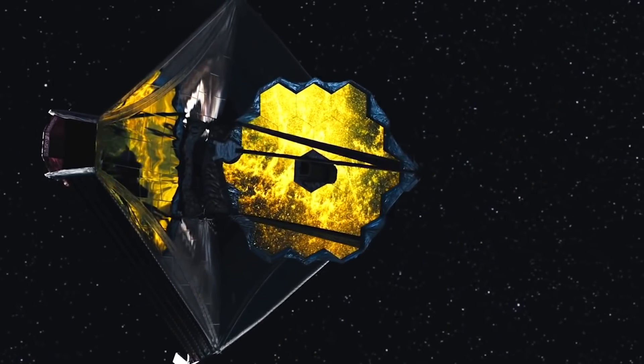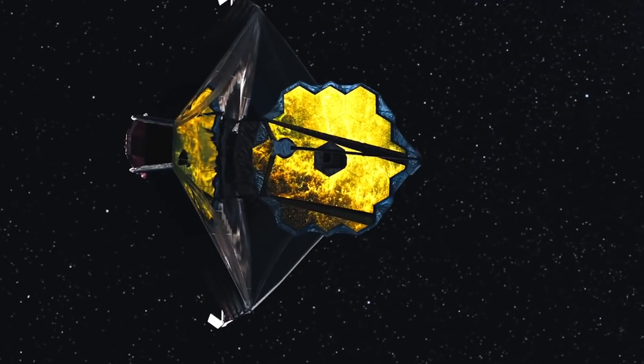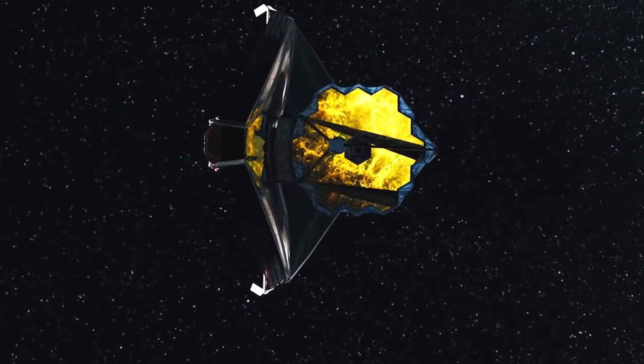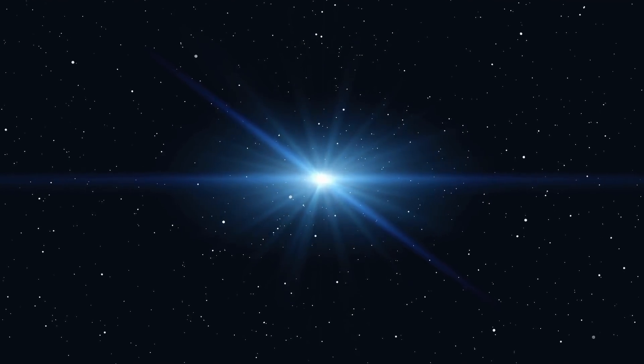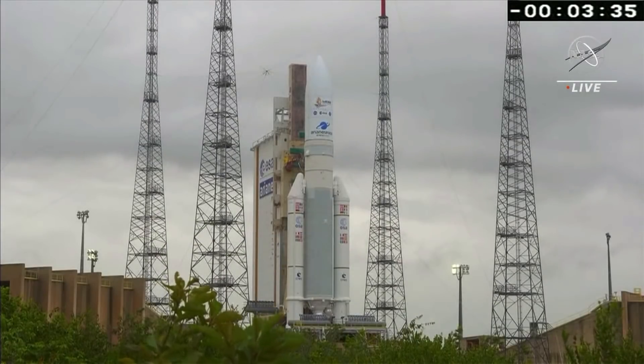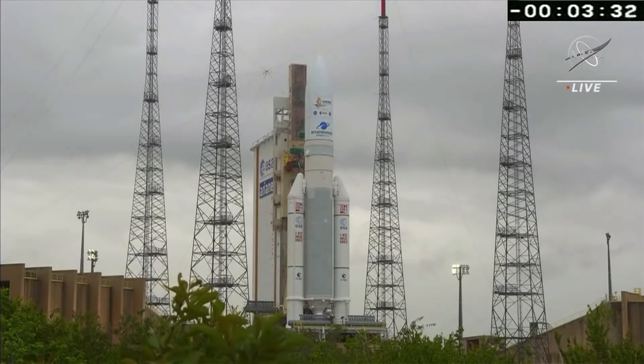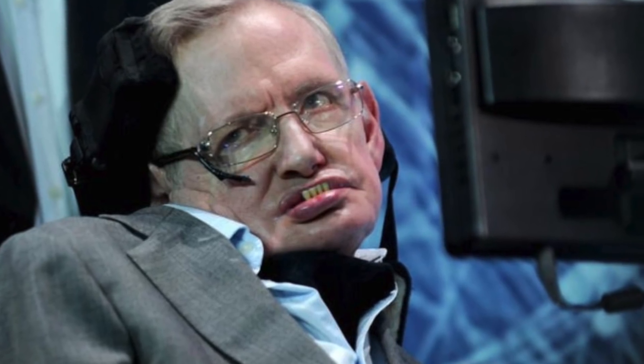When James Webb reached its new home in space, many scientists around the world began working on what they could solve using this gigantic observatory. Of these, the launch of the James Webb Telescope may provide the data needed to evaluate one of Stephen Hawking's most contentious theories, that dark matter is made up of black holes formed in the Big Bang's early moments.